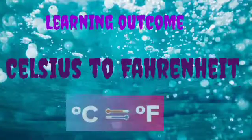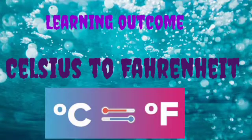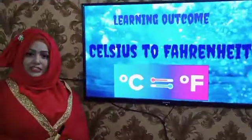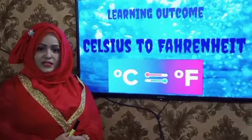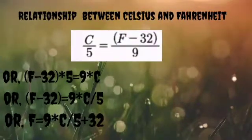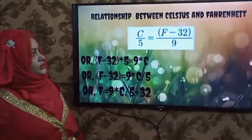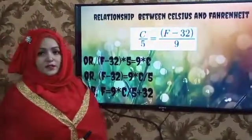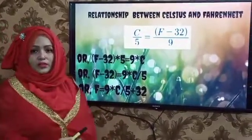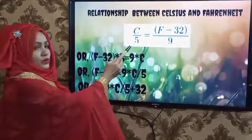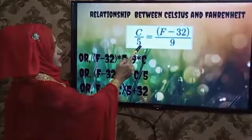Let us move to our lesson. We will learn about flowchart and algorithm for Celsius to Fahrenheit. The relationship between Celsius and Fahrenheit — this is the main formula we need in this algorithm: C divided by 5 equals F minus 32 divided by 9.